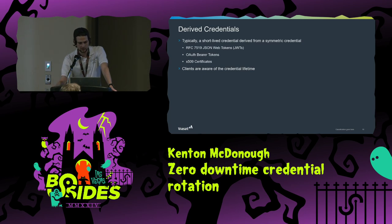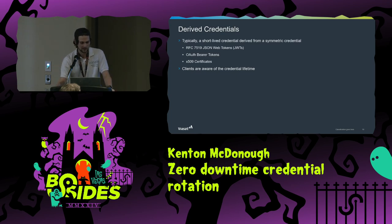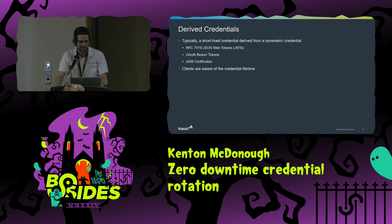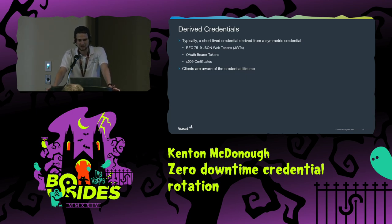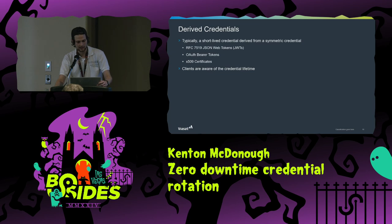The other type is a derived credential, which are typically short-lived. These are derived from a symmetric credential — examples include RFC 7519 JSON Web Tokens, OAuth bearer tokens, and X.509 certificates. Clients are aware of the credential lifetime. You typically don't store these in a secret manager directly, but you store the symmetric thing that's used to derive one of these. You can crack open a JWT and check the expiration time, same with an OAuth token, or read your certificate — it's in plain text.